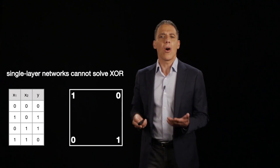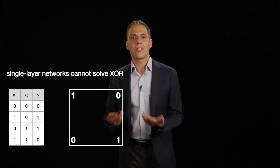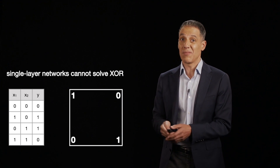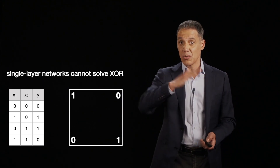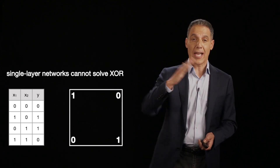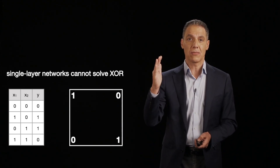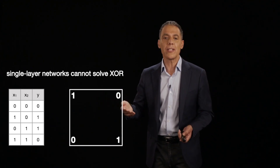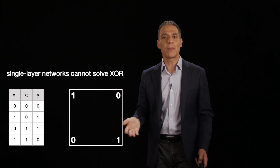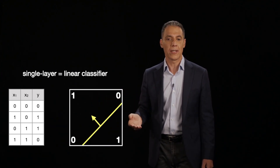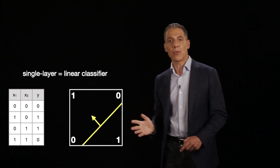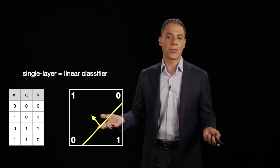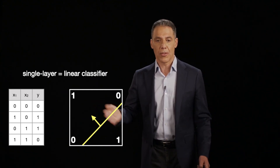What do we know about these linear models? Without any non-linearity, all they can do is draw a line in this space. That's what they're capable of doing. So let's try to draw a line in this space that separates the zeros from the ones — that's what a classifier should do.